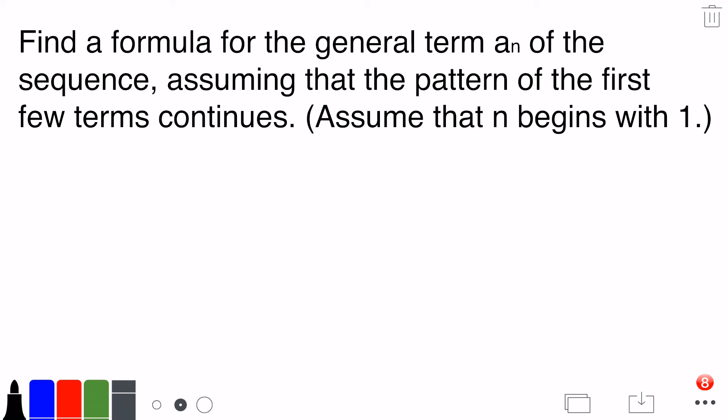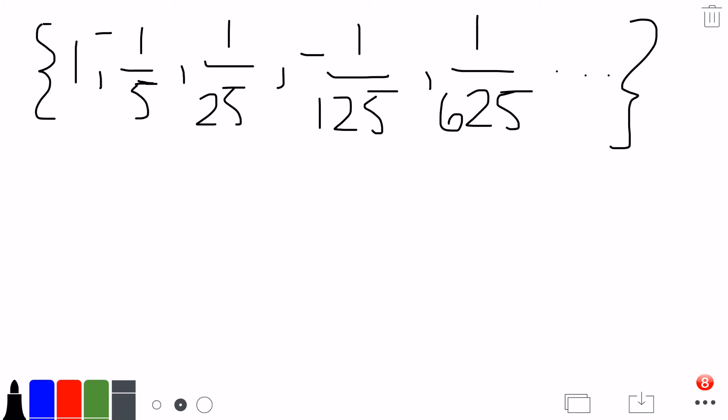Find a formula for the general term a sub n of the sequence, assuming that the pattern of the first few terms continues. Assume that n begins with 1. So here's our sequence. Let's first take a look and see if we notice anything.